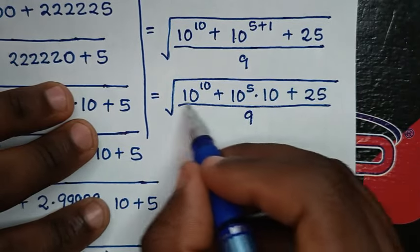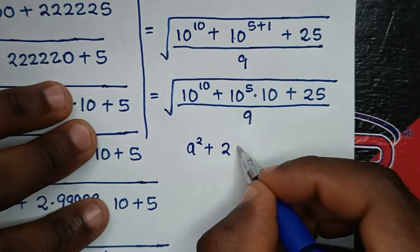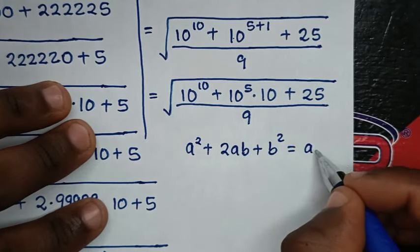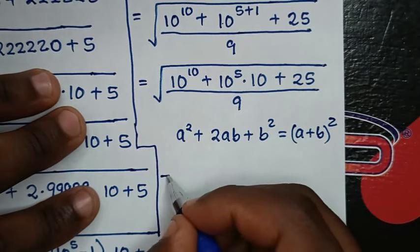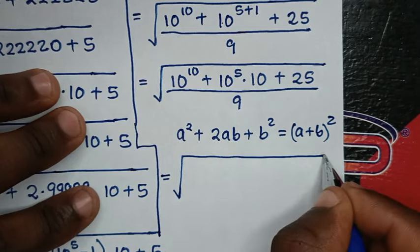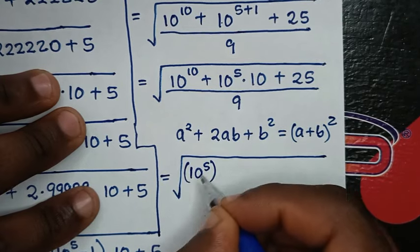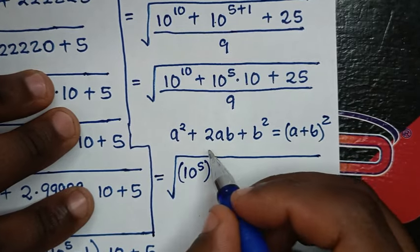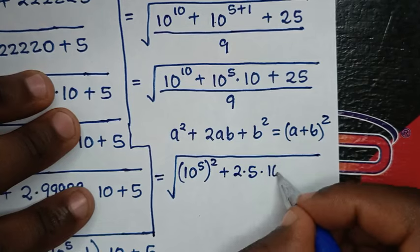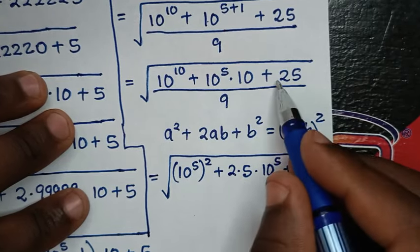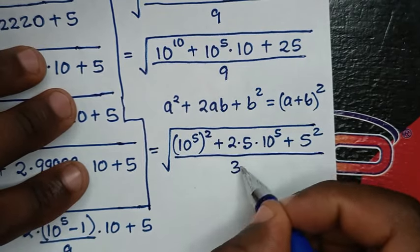Then from here in the numerator, we make it to be in the form of a² plus 2ab plus b², which is equal to (a + b)². So it will be equal to square root of a square — this 10 power of 10, plus 10 power of 5, then plus 2ab which is — from here — 10 is same as 2 times 5, then times this 10 power of 5, plus b square — 25 into square is 5 square. Then over — here 9 into square is 3 square.